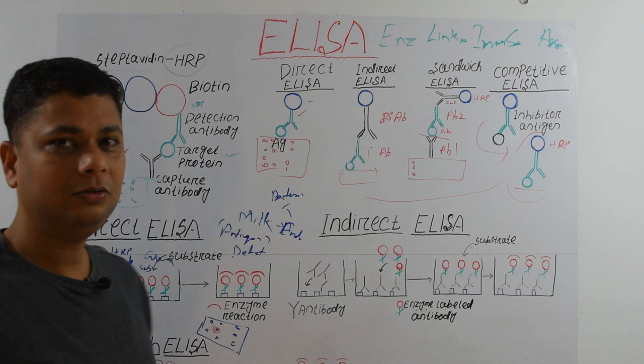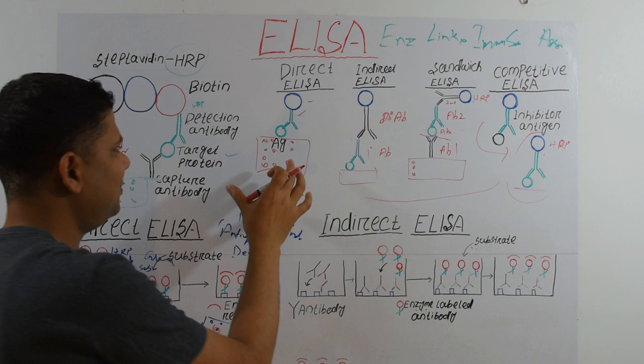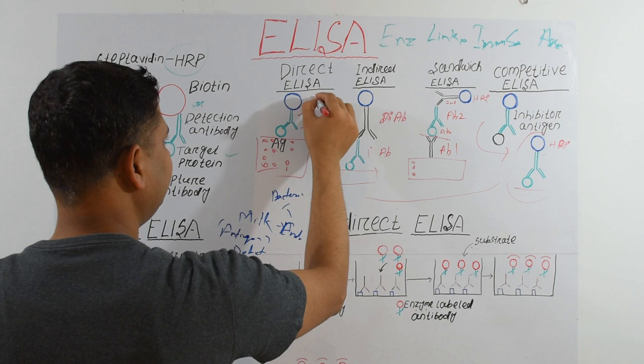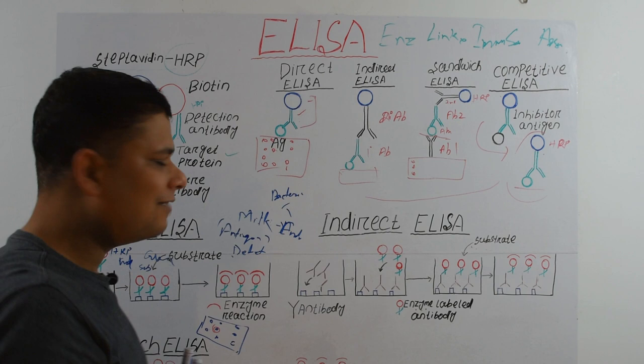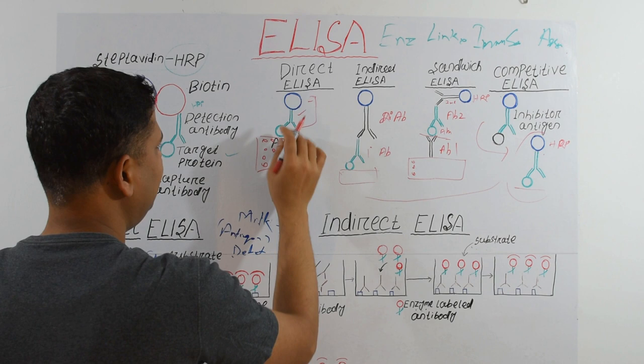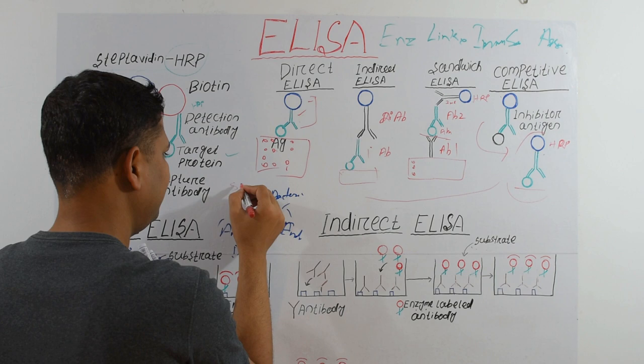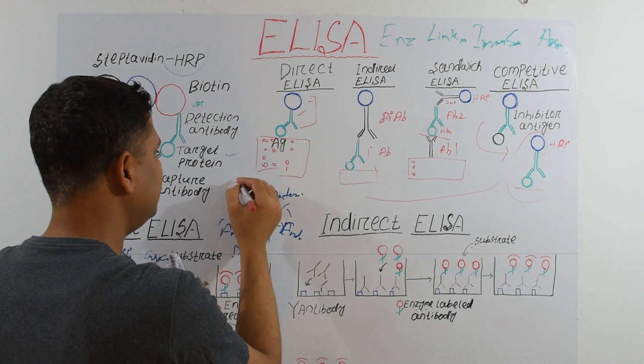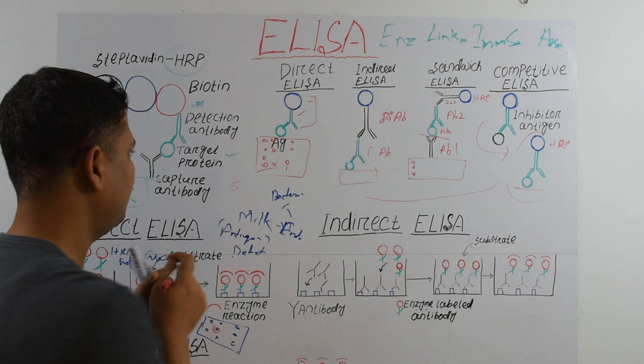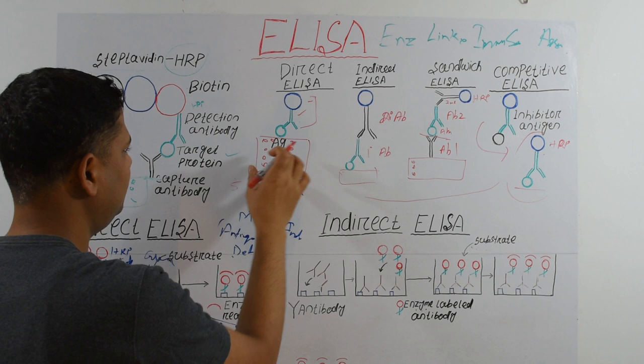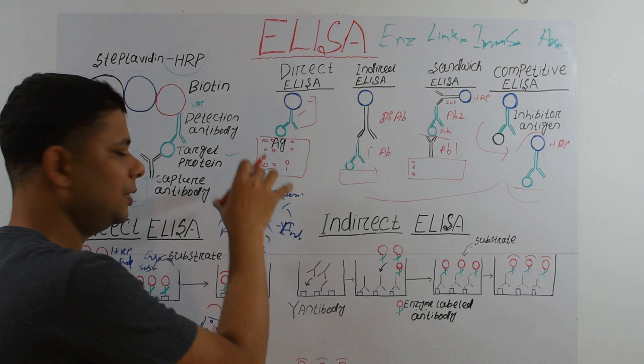The disadvantages of Direct ELISA are: first, conjugation — we need to conjugate HRP with our antibody. Second, the signal is low because if we have only five antigens with five antibodies bound, the signal will be very weak. Third, because we are fixing the antigen to the surface, multiple non-specific antigens may also be fixed, causing a higher background.